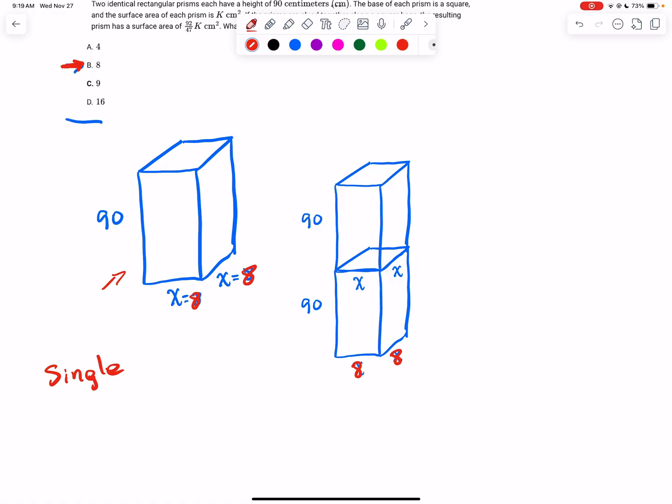To find the surface area of that shape on the left, we have to find the area of the front and the back, the area of the top and the bottom, and the area of the left and the right.